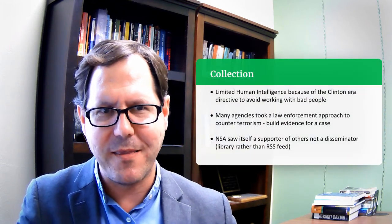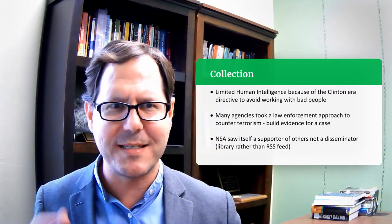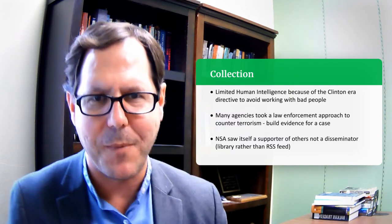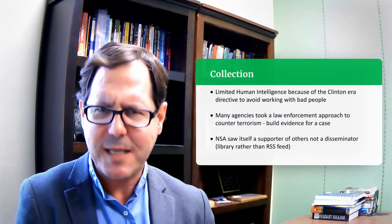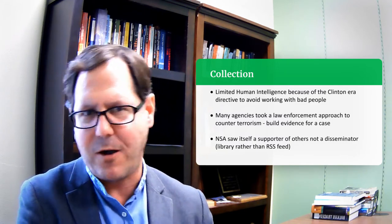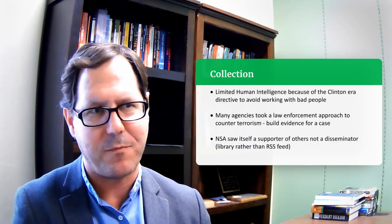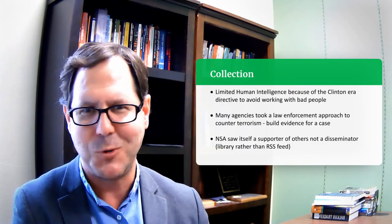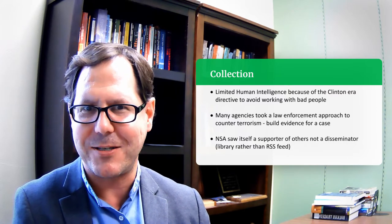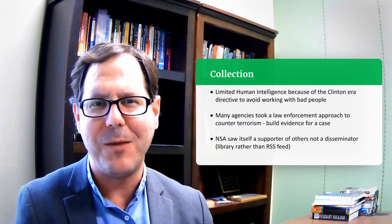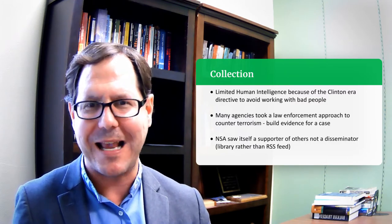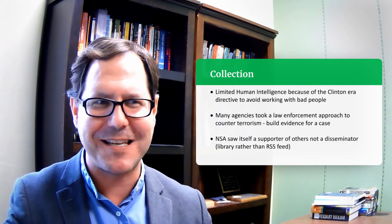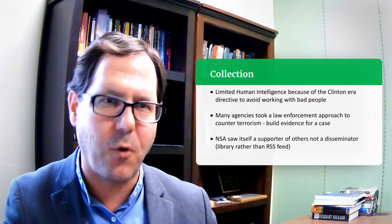Hastedt also notes that the NSA saw itself as a supporter of others, not as a disseminator. It would collect incoming information and saw itself as a library — if you need something, you come and ask. The NSA had information that could have been valuable to others but wasn't pushing it out; it wasn't treating what it had as an RSS feed routing information out to the rest of the intelligence community. So it was a passive collector that wasn't being used to its full effectiveness.